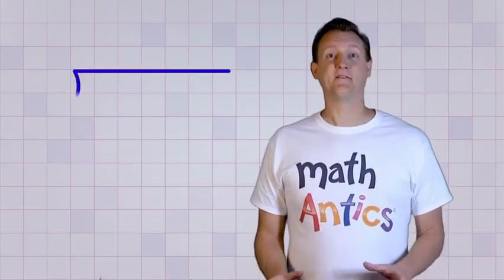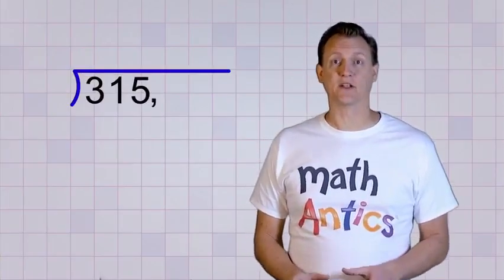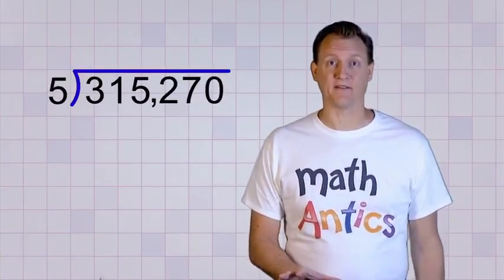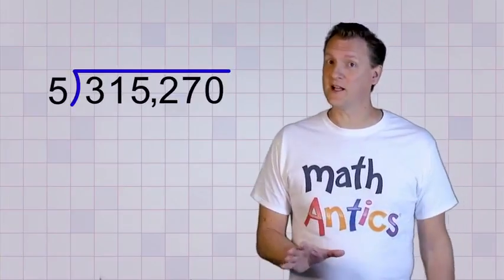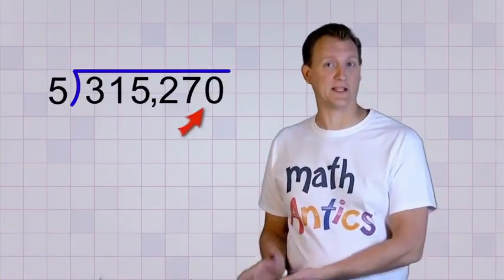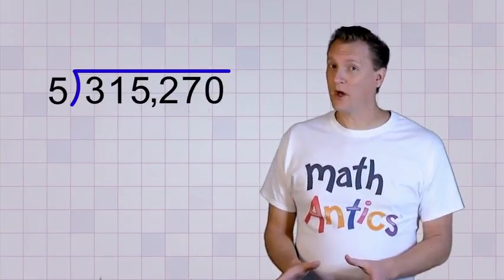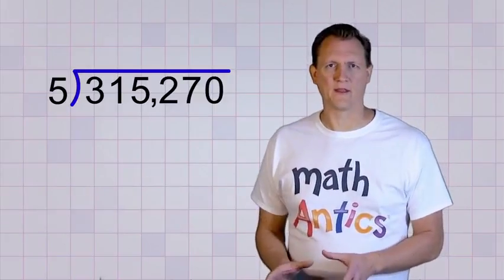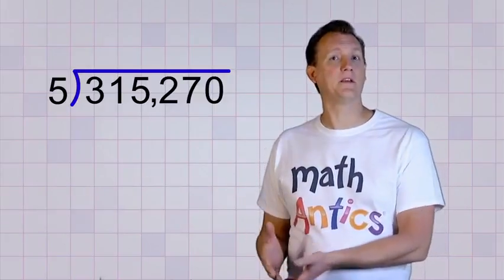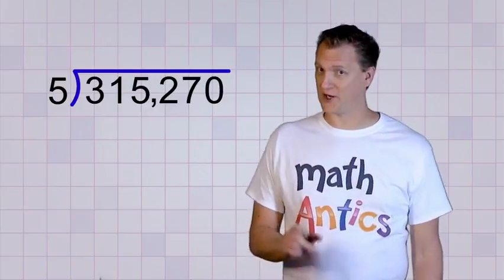Okay, now that you know the procedure for long division, are you ready to see a really long problem? Good! I thought so! Let's divide 315,270 by 5. Now don't worry, it's really not that hard if you just go digit by digit. I'm going to work the problem pretty fast, so don't worry if you don't follow all the math. Just focus on the repeating division process as we go along. Are you ready?